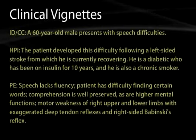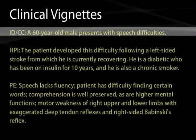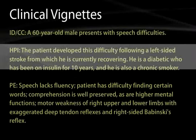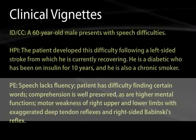A clinical vignette to solidify this information: a 60-year-old male presents with speech difficulties following a left-sided stroke. He is diabetic on insulin for 10 years and a chronic smoker. On physical exam, his speech lacks fluency, he has difficulty finding certain words, and his comprehension is well-preserved, as are higher mental functions. He has motor weakness of the right upper and lower limbs with exaggerated deep tendon reflexes and right-sided Babinski's reflexes. With his inability to speak fluently, this patient has a Broca's aphasia — a non-fluent aphasia — with a lesion in the left inferior frontal lobe.